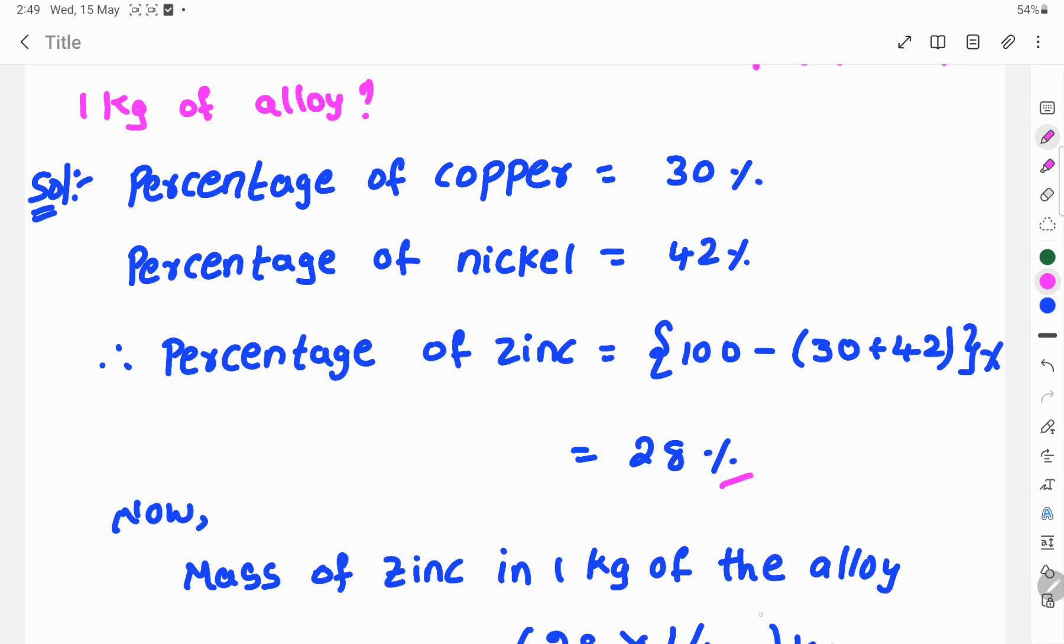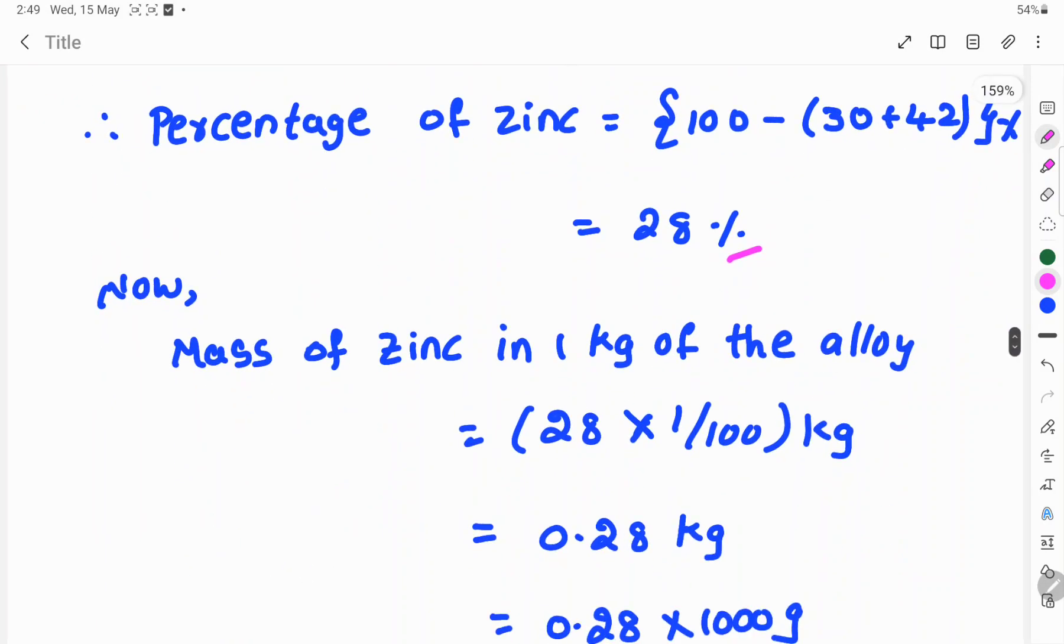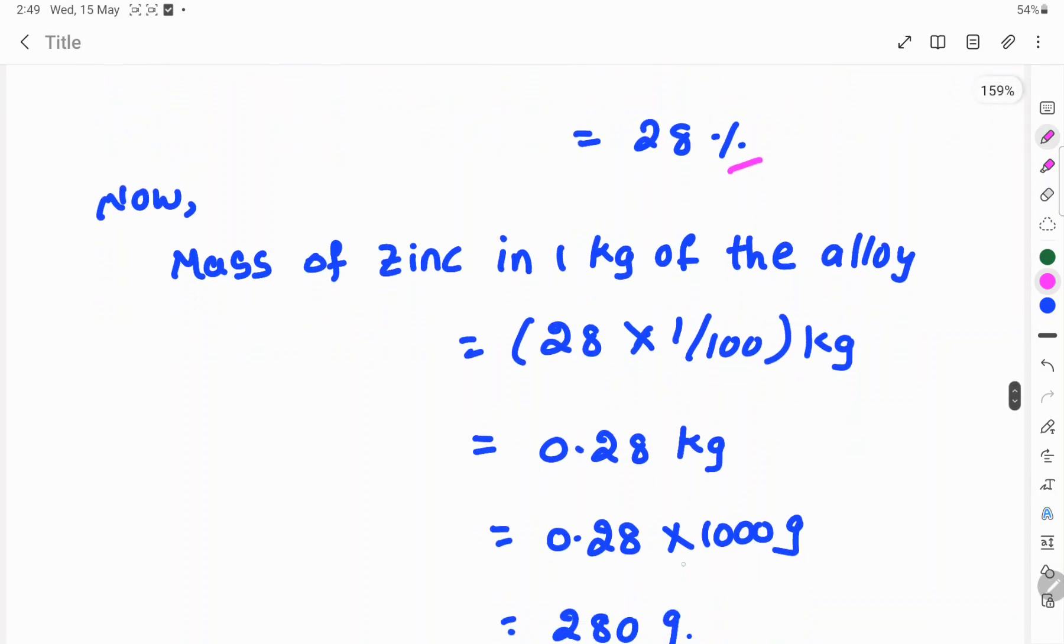Now, the mass of zinc in 1 kg of the alloy is equal to 28 into 1 by 100 kg. So, 28 into 1 by 100 is 0.28 kg. 0.28 kg into 1000 grams - 1 kg is equal to 1000 grams.